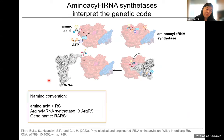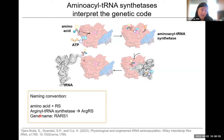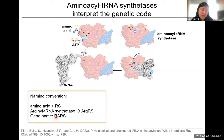Just briefly, I'd like to introduce the naming conventions. My favorite amino acid is arginine. The corresponding aminoacyl-tRNA synthetase is arginyl-tRNA synthetase, or ArgRS for short. The gene name for that is RARS1, with R being the one-letter abbreviation of the amino acid.